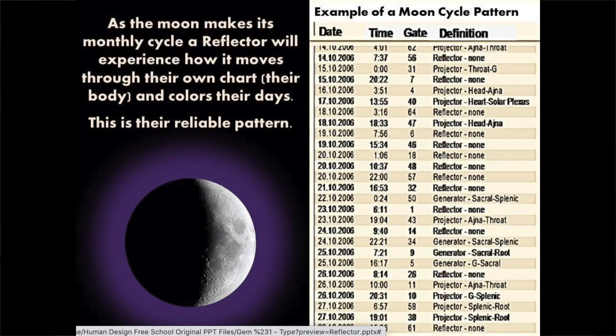In Human Design, the moon is making a transit through each of the 64 gates every 28 days. In that cycle, different gates are being activated. When you're a reflector, you're really sensitive to these transits because an activation of a transit can actually cause one of your gates to become a channel, and then all of a sudden you might for some hours become a generator. This cycle is the same every single 28 days, so you can learn as a reflector how this cycle works for you and study your own cycle. This makes the reflector very connected to the lunar cycle.